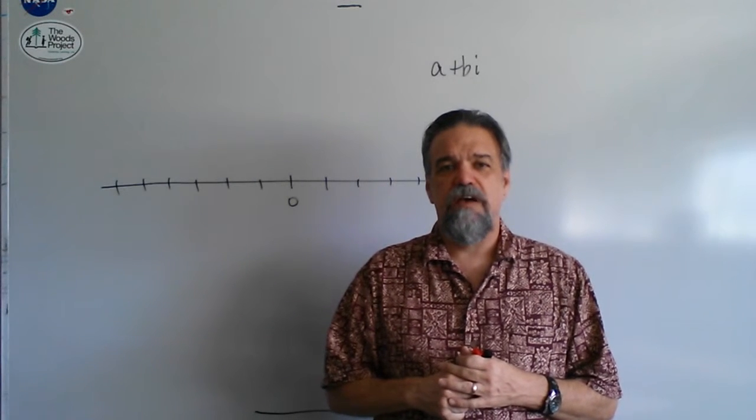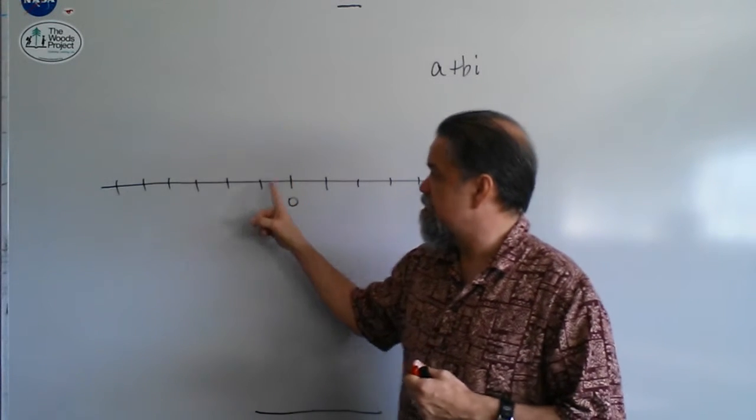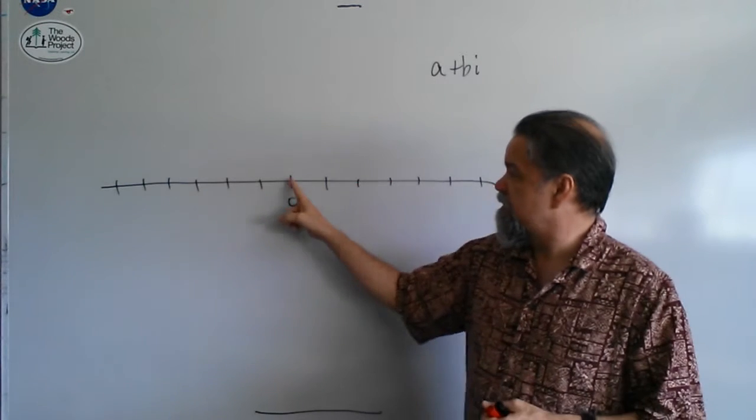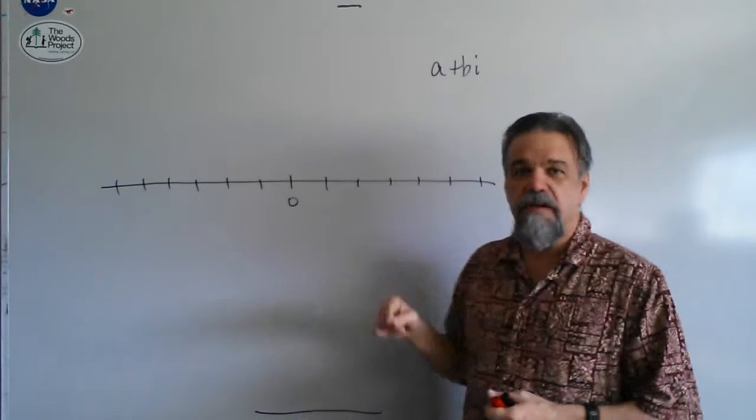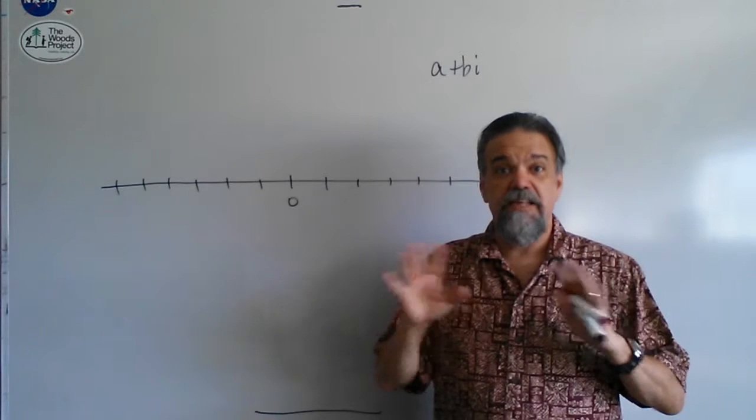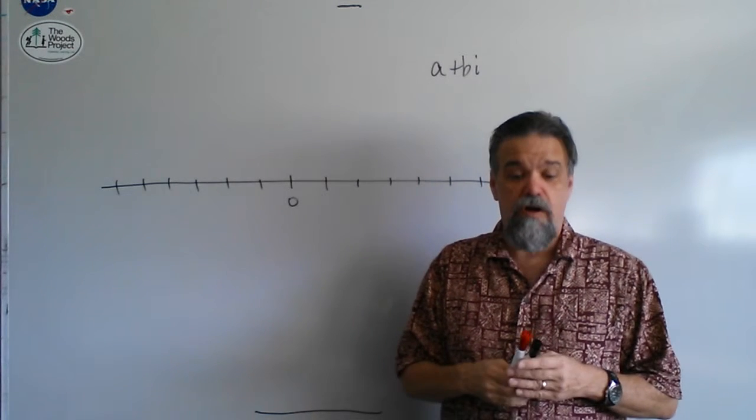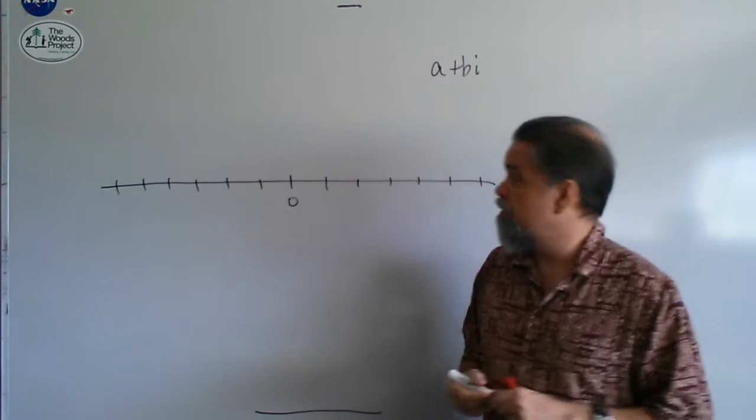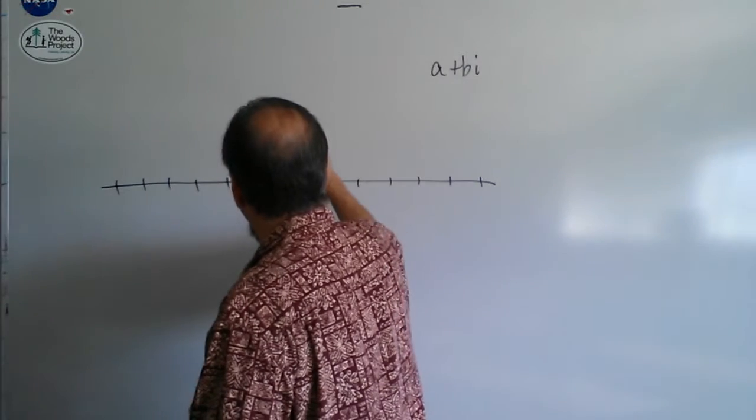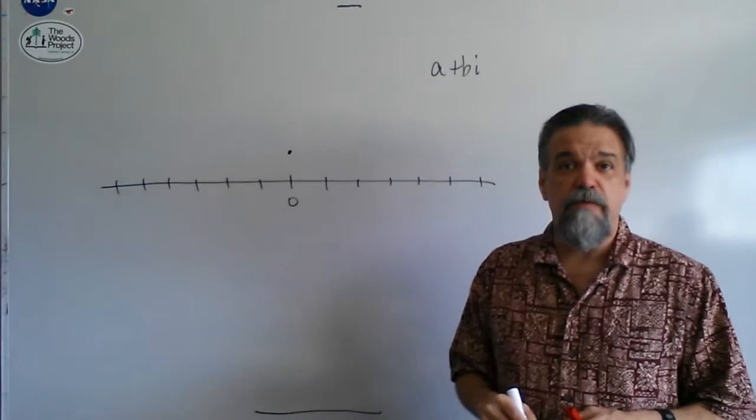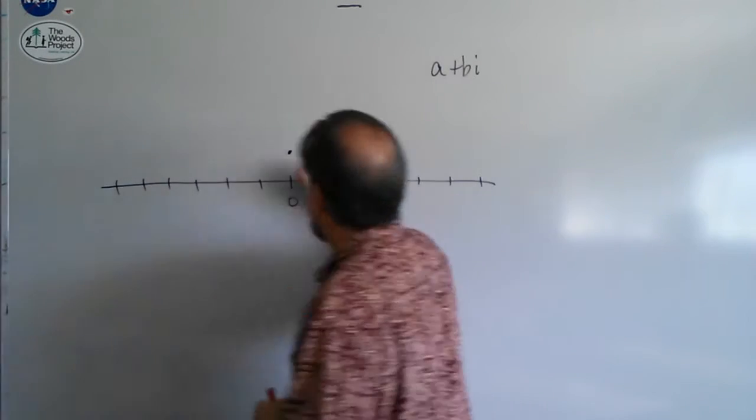So, what that tells you is, i is not on this side of the number line, and it's not that point there, and it's not on this side of the number line, which means it's not on the number line. It's off the number line, and where we put it is right there. The number line becomes the number plane.